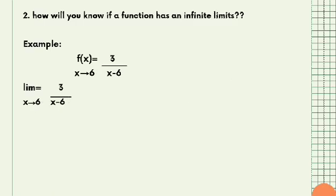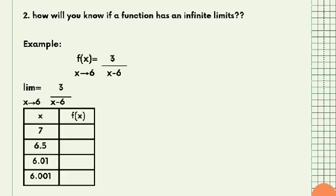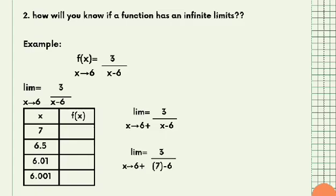Now for the limit of 3/(x − 6) as X approaches 6 from the right. The value of X approaching 6 from the right starts at 7. Substituting x = 7: 3/(7 − 6) = 3.